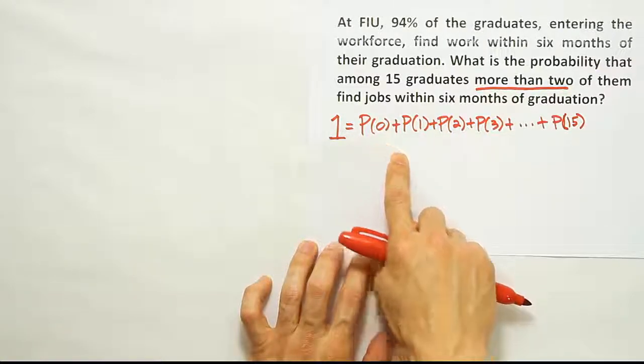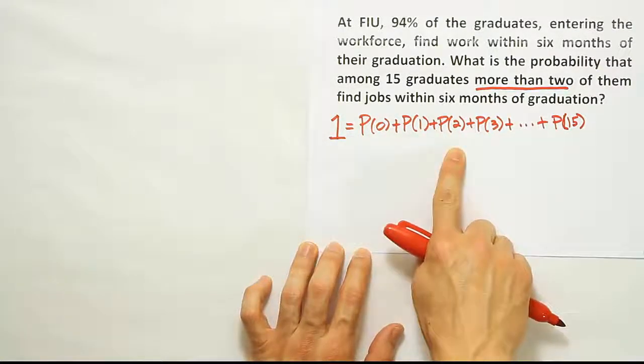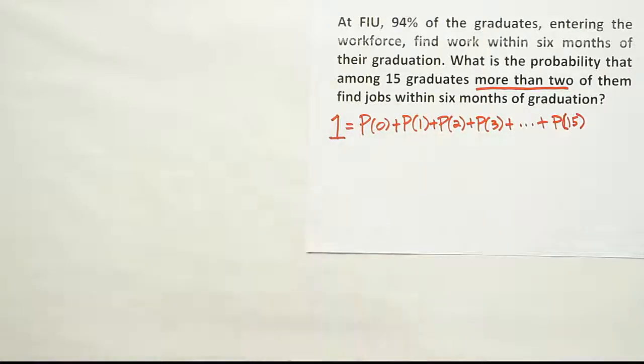Either none of the 15 find a job, one of the 15 people find a job, all the way up to all of them find a job, right?